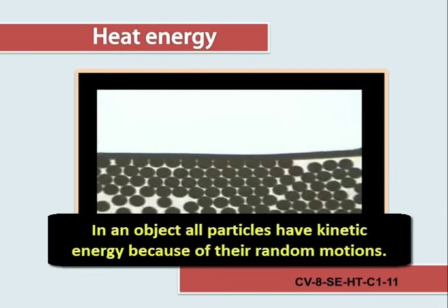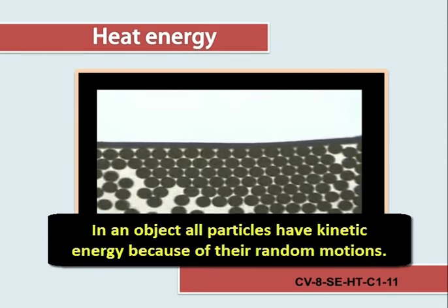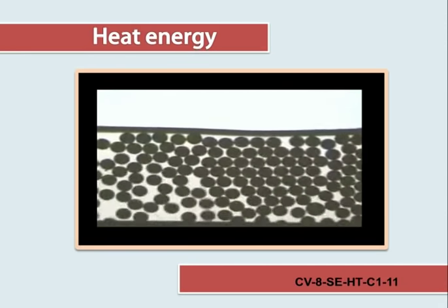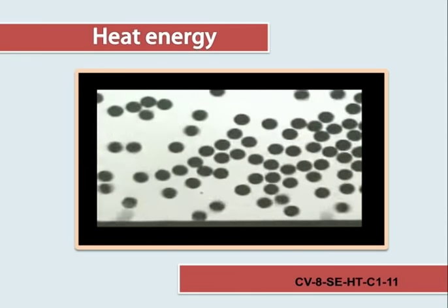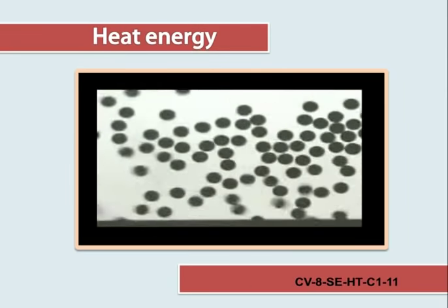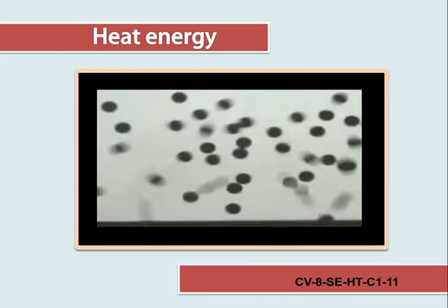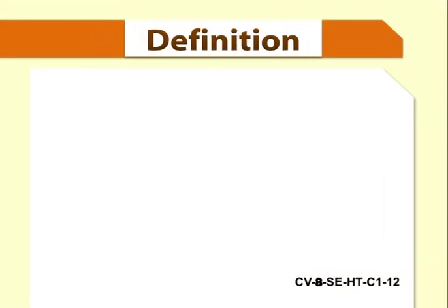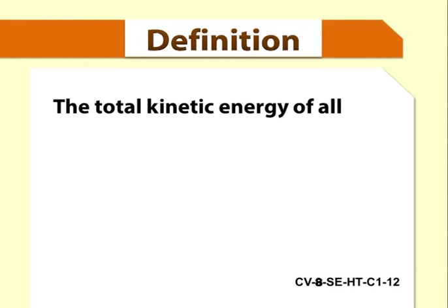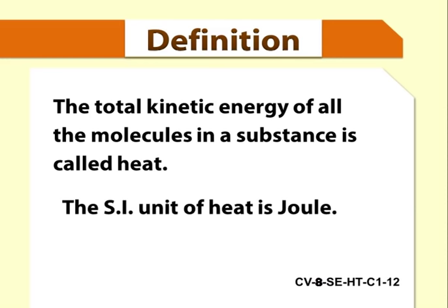In an object, all particles have kinetic energy because of their random motions. Heat energy is the amount of internal kinetic energy of all the molecules. Greater the amount of kinetic energy, greater is the heat energy. Now, let us define heat. The total kinetic energy of all the molecules in a substance is called heat. The SI unit of heat is Joule.